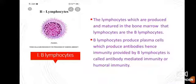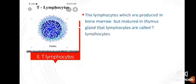The second type is T lymphocytes. The lymphocytes which are produced in the bone marrow but matured in the thymus gland are called T lymphocytes. The letter 'T' stands for thymus.